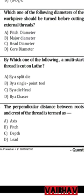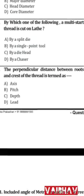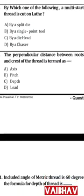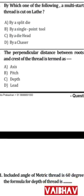Question 4: Which one of the following multistart threads is cut on a lathe machine? The answer is B — multistart threads are cut using a single point cutting tool on the lathe.